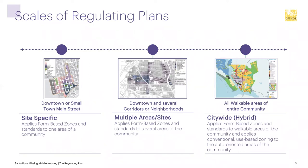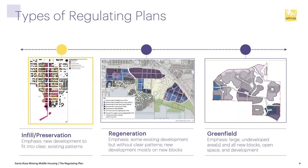On the left-hand side, you see what we call a site-specific approach, typically for downtowns, small-town main streets, or a very specific area using the form-based code. Or there's the multiple areas or sites approach, where there might be several corridors, maybe a downtown or parts of a neighborhood, shown on separate maps. The third combination is what we at Opticos call a hybrid code — combining areas that use conventional zoning with areas that use form-based zoning, shown here in light and dark purple alongside the conventional yellow, green, and red zones.